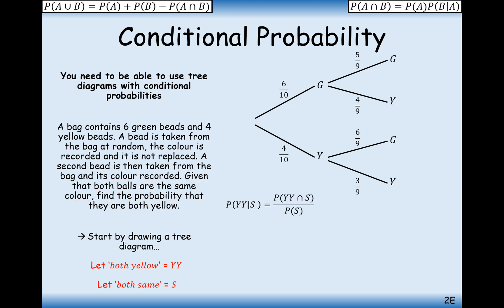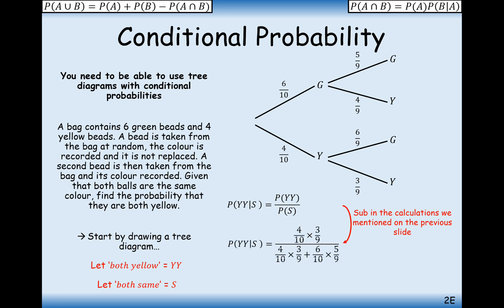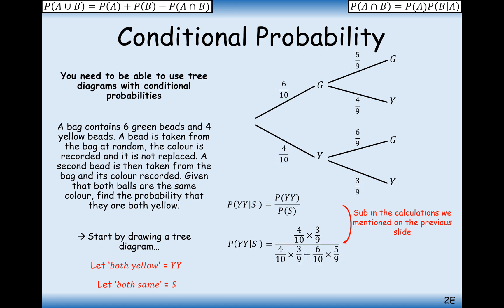Now we'll do the calculation. We've got the probability of yellow, yellow and it being the same colour — that would just be the probability of yellow, yellow over the probability of it being the same. The probability of going yellow, yellow is four-tenths times three-ninths. The probability of it being the same — in this case you'd have to add together the probabilities of yellow, yellow and green, green. So the top is just yellow, yellow, but the bottom is the probability of the same outcome happening, which could either be green, green or yellow, yellow. The calculation gives an answer of two-sevenths. If the colours picked out are the same colour, the probability that they were both yellow is two-sevenths.